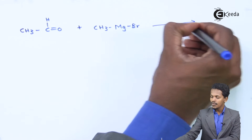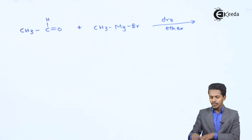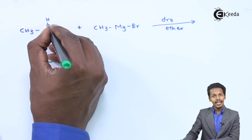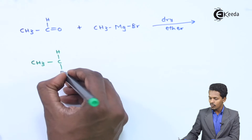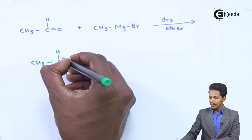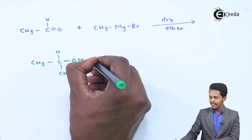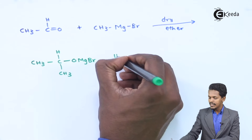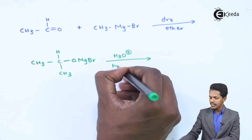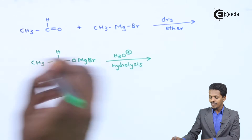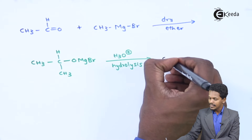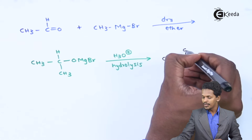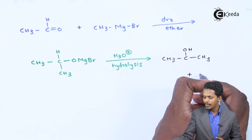The reaction proceeds in the presence of dry ether as a solvent. The adduct we obtain is CH3-C(H)(CH3)-OMgBr. The hydrogen remains on the carbon as it is, the CH3 alkyl group from the Grignard reagent attaches to the carbon, and MgBr attaches to the oxygen. We then treat it with H3O+ for hydrolysis.